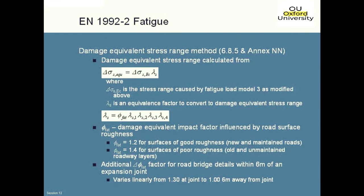That gives us delta_sigma_CE,s — the stress range from traversing that factored vehicle — before we apply lambda_S. We then have to multiply by lambda_S, which is made up of a whole series of factors. First of all, phi_fat is a factor influenced by road surface conditions — essentially another impact factor — giving 1.2 for surfaces of good roughness and 1.4 for surfaces of poor roughness. Unfortunately you have to make a distinction between whether what you're designing is for new and maintained roads or old and unmaintained roads, which requires you to gaze into the future 120 years. There's no more guidance on it than that in the Eurocode.